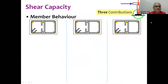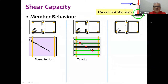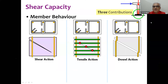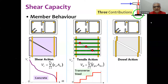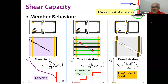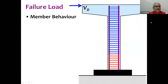The shear capacity of the entire member has three contributions: the shear action from concrete, the tensile action from stirrups — each time the crack crosses a stirrup there is a step rise in shear strength — and the dowel action from longitudinal bars, which comes into picture only when the crack has gone through the entire cross section.